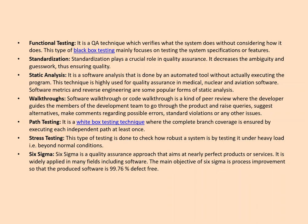Path testing is a white-box testing technique where complete branch coverage is ensured by executing each independent path at least once. Stress testing is a non-functional testing technique done to check how a system behaves under heavy load beyond normal conditions. Finally, Six Sigma is a quality assurance approach aimed at making the product nearly perfect — its main objective is process improvement so that the produced software is 99.76% defect-free. Six Sigma is widely applied in many fields including software. That concludes this tutorial on SQA.